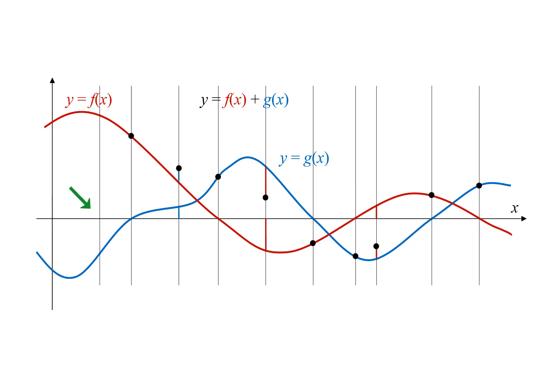Here's a value of x where g of x is negative. Again, we draw a blue line segment to represent the value of g of x, but this time the segment goes down from the x-axis. To add this to f of x, we go down by this distance from f of x to get another point on our graph.